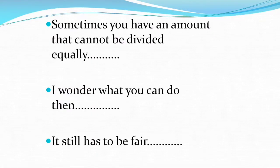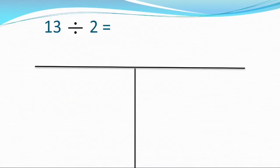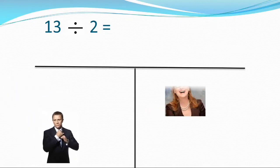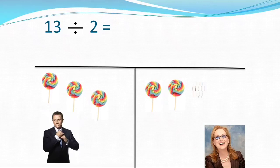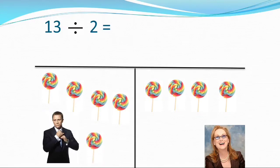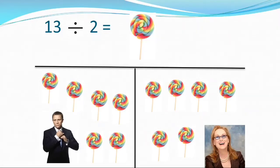Sometimes you have an amount that cannot be divided equally. It still has to be fair — like 13 divided by 2. So with one boy and one girl, each one has an equal number of candies, but there is one left over.